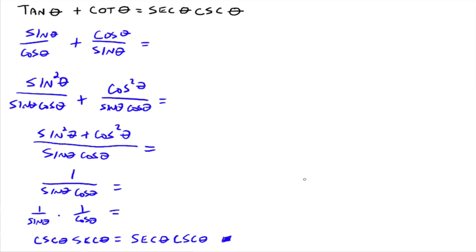Our goal is to take one side of the equation, use trig identities and some algebra to make it look like the other side. Once we do that, we know it's a true statement. One reason this would be important: in calculus, it might be easier to do the work if your expression is in a different form. If you can take the original form and rewrite it into a simpler situation, it's easier to apply calculus. Right now, we're just practicing our identities.